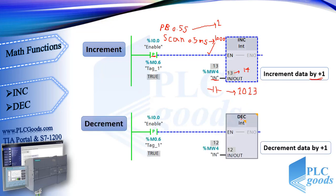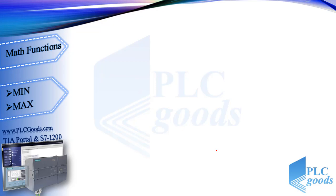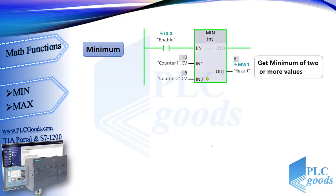The next instruction, decrement, works inversely — for example it can change 12 to 11. Next instructions are used to find minimum or maximum values. For example, the minimum of 10 and 6 is 6. These instructions can have more than two inputs.